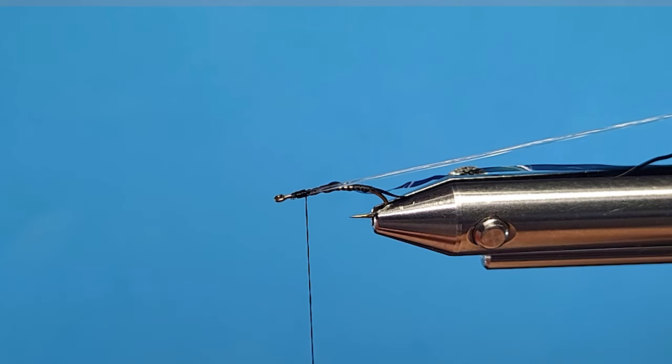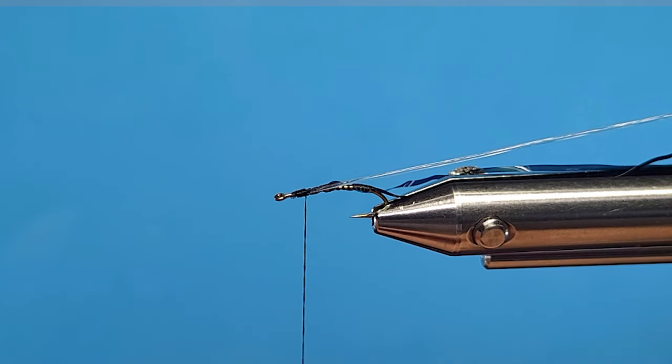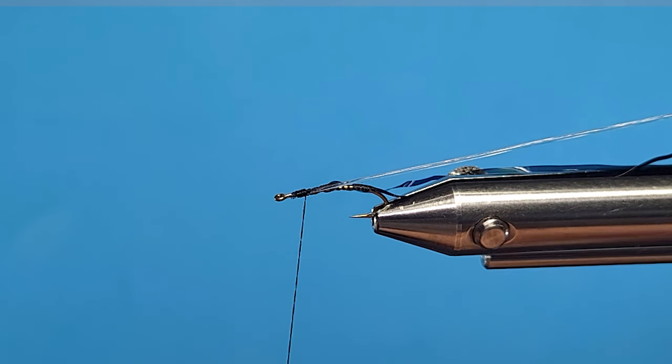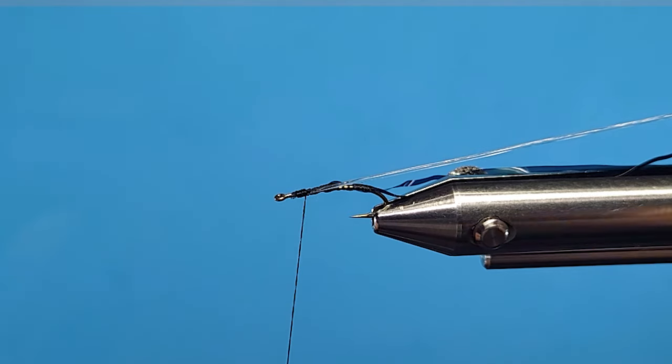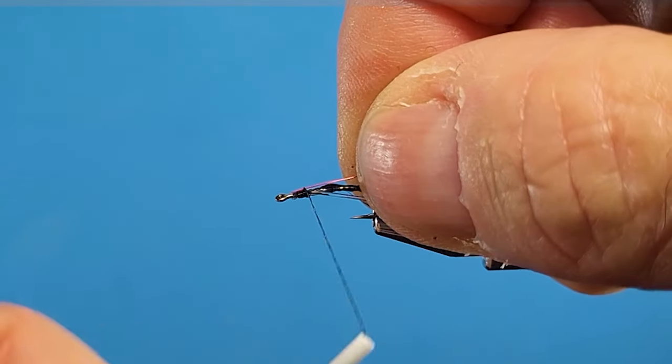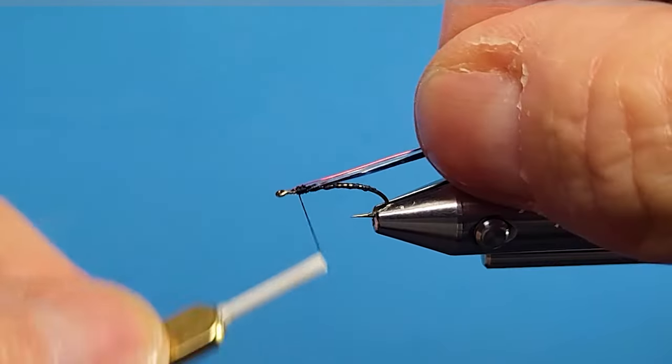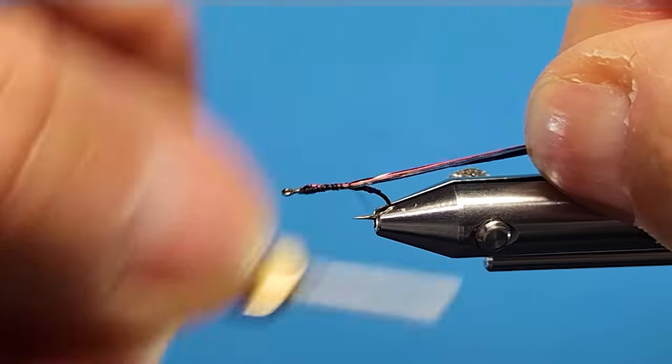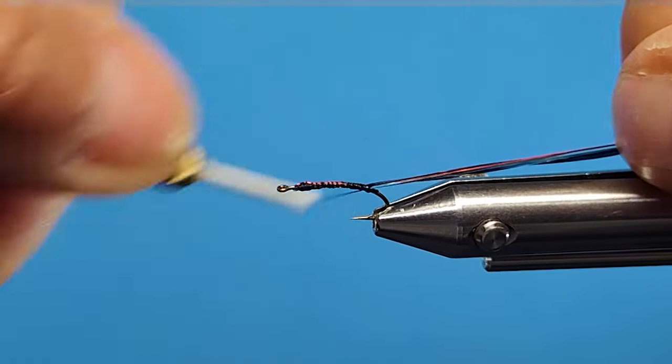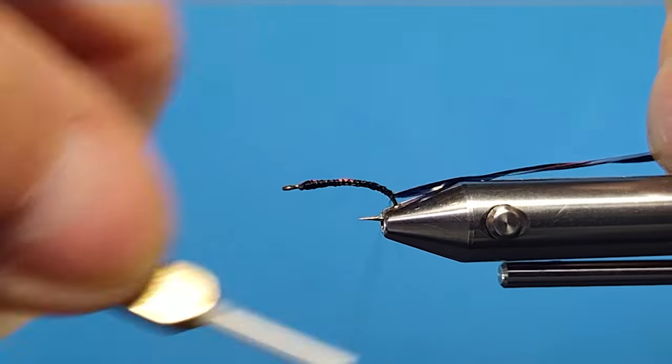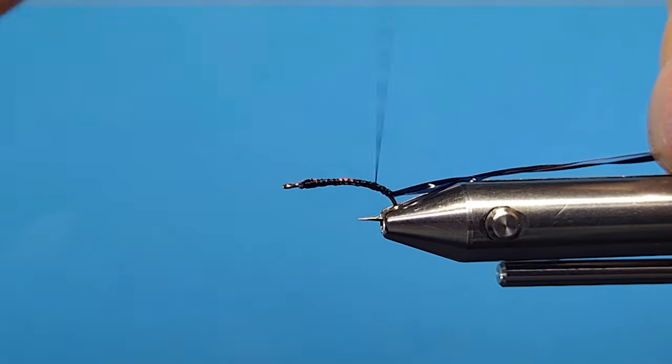I'll grab some red wire for the rib. I'll use an extra small on it. I don't want too prominent a rib. I just want the segmentation in there. And red and black is really really good colors. You chronomid guys, that'd be probably one of our favorite colors I would think.